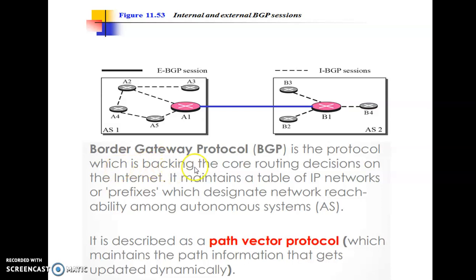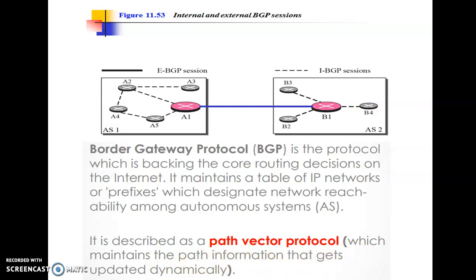In autonomous system 1, the speaker node is A1, while in autonomous system 2 the speaker node is B1. BGP is the protocol backing the core routing decisions on the internet. It maintains a table of IP networks or prefixes which designate network reachability among autonomous systems. Autonomous systems are nothing but a group of routers administered or organized by a company, organization, or single ISP. BGP is described as a path vector protocol, which maintains path information that gets updated dynamically.